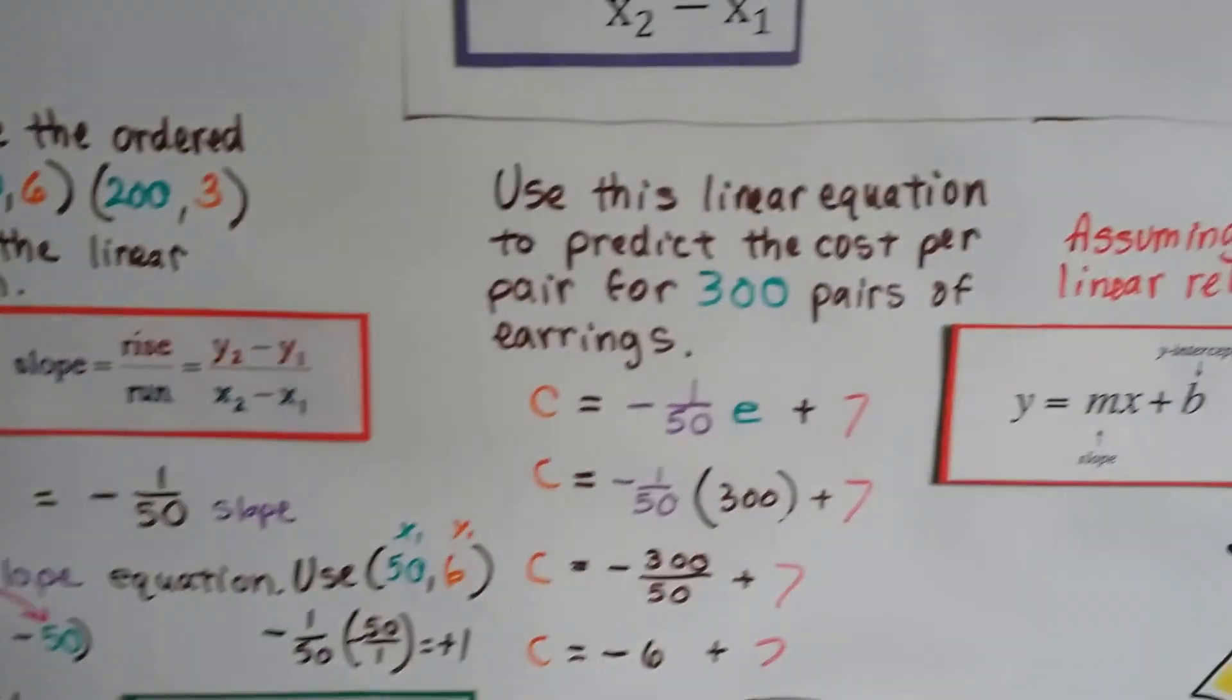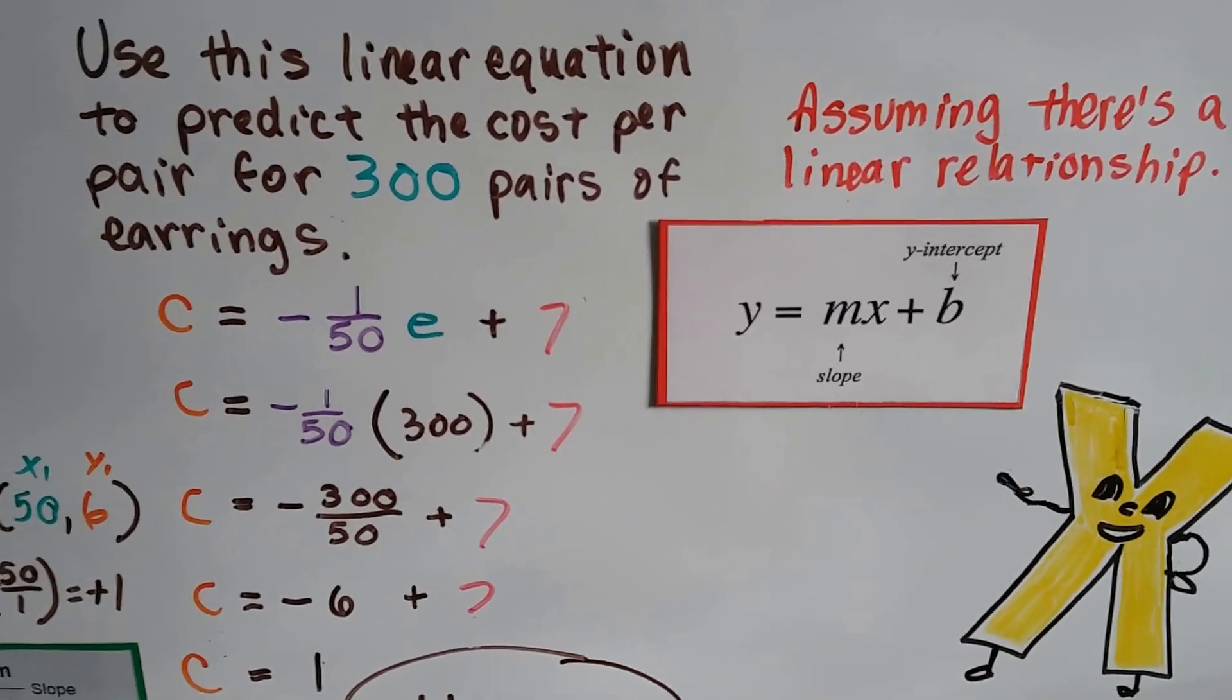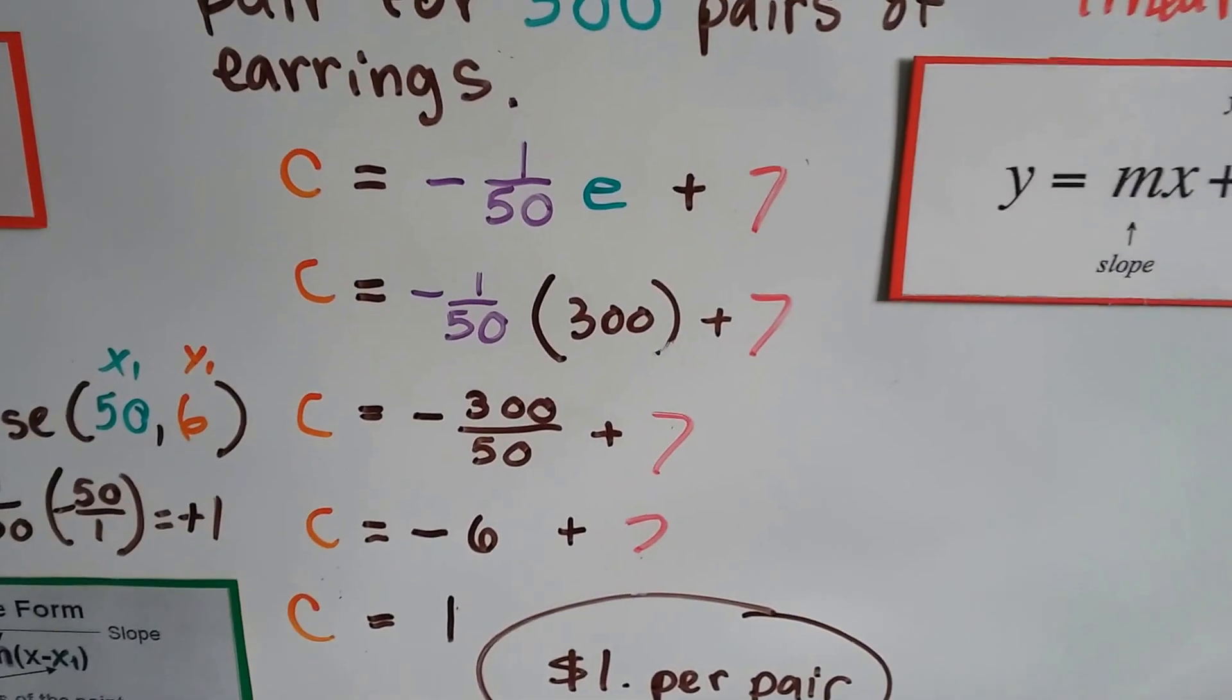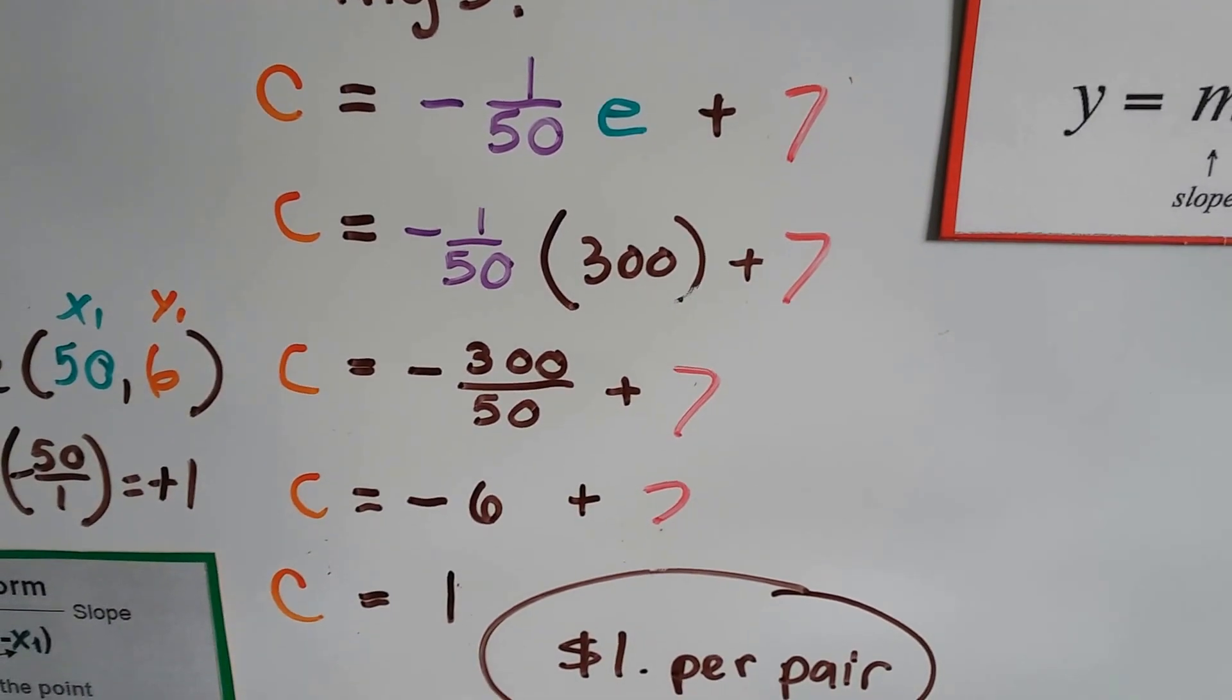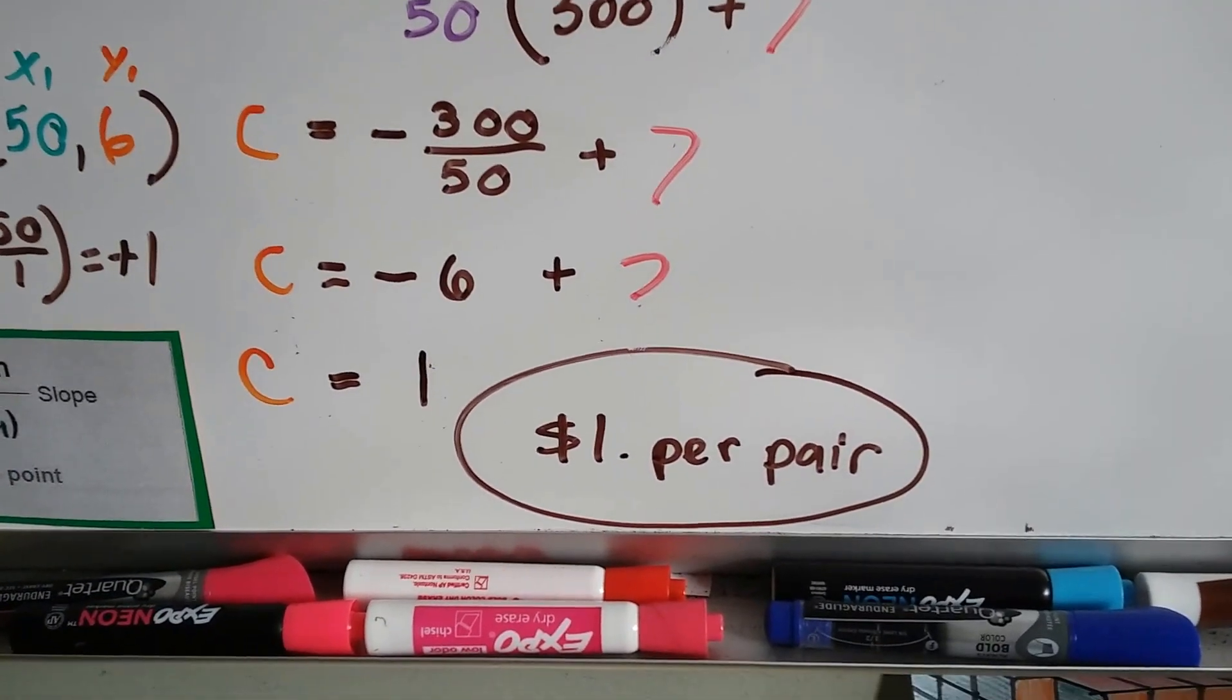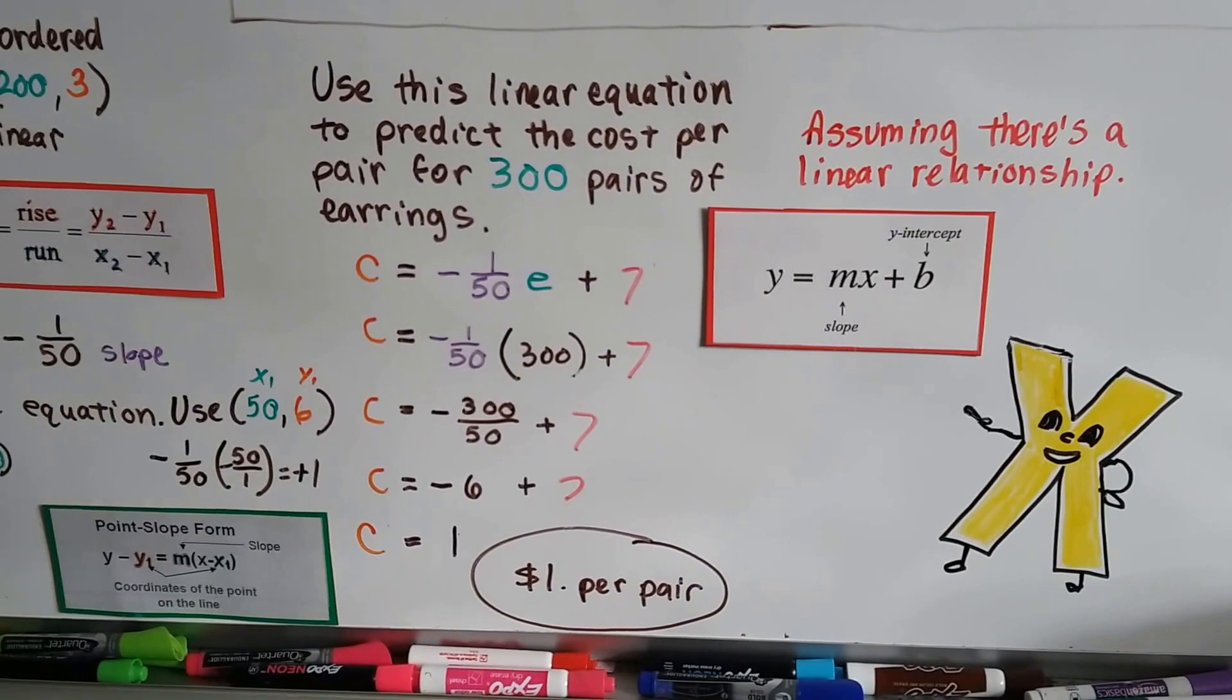Now we can use this linear equation to predict the cost per pair for 300 pairs of earrings. So if she makes more earrings, assuming there's still a linear relationship, it's in slope-intercept form, all we have to do is plug the 300 in where the e is. And when we multiply negative 1/50th times 300, we get negative 300 over 50. 50 goes into 300 6 times, so we have a negative 6. When we add a negative 6 and a positive 7, we get a 1. So we know it's only a dollar a pair if she makes 300 pairs. That's really going to boost her profits, won't it, if she keeps the price the same?